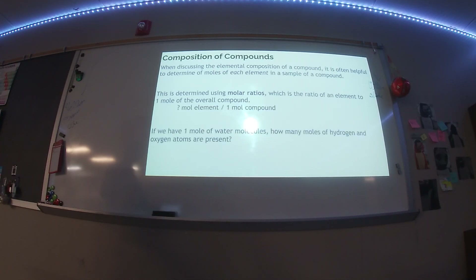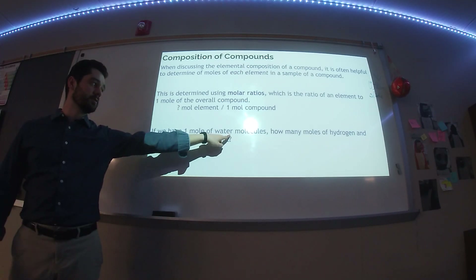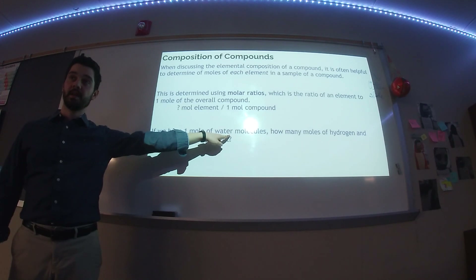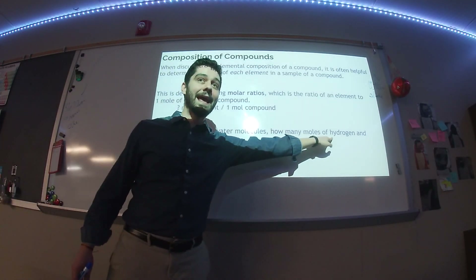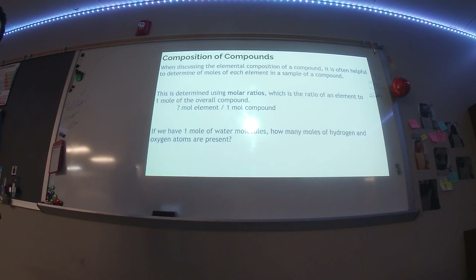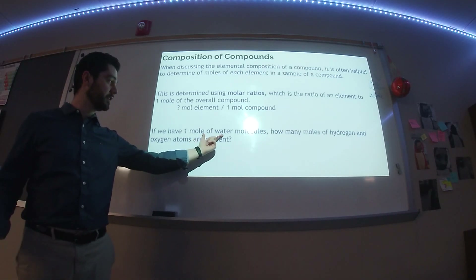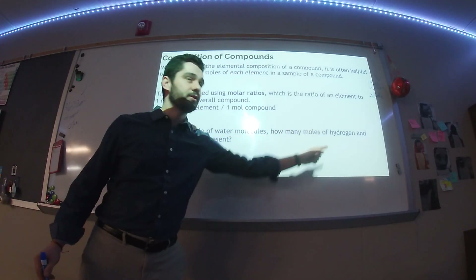Let's say I have a mole of a compound — a mole of water. I'm going to ask a different question than before. We know that this is 6.022 times 10 to the 23rd water molecules, but what if I wanted to know how many hydrogen atoms and oxygen atoms are in the water? It's easier than you think — there's no mass involved. I just want to know how many. I know I have a mole's worth of molecules, but how many hydrogen atoms do I have?